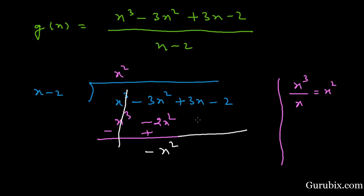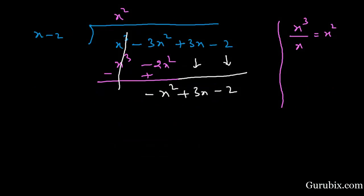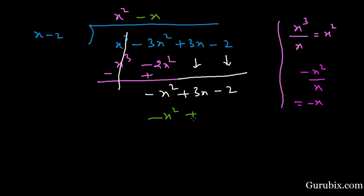We bring down the remaining terms plus 3x minus 2. We find the next term in the quotient by dividing minus x squared by x, which gives minus x. So the next term in the quotient is minus x. Multiplying minus x by the divisor gives minus x squared plus 2x. We change the sign, the minus x squared terms cancel, and we are left with x minus 2.